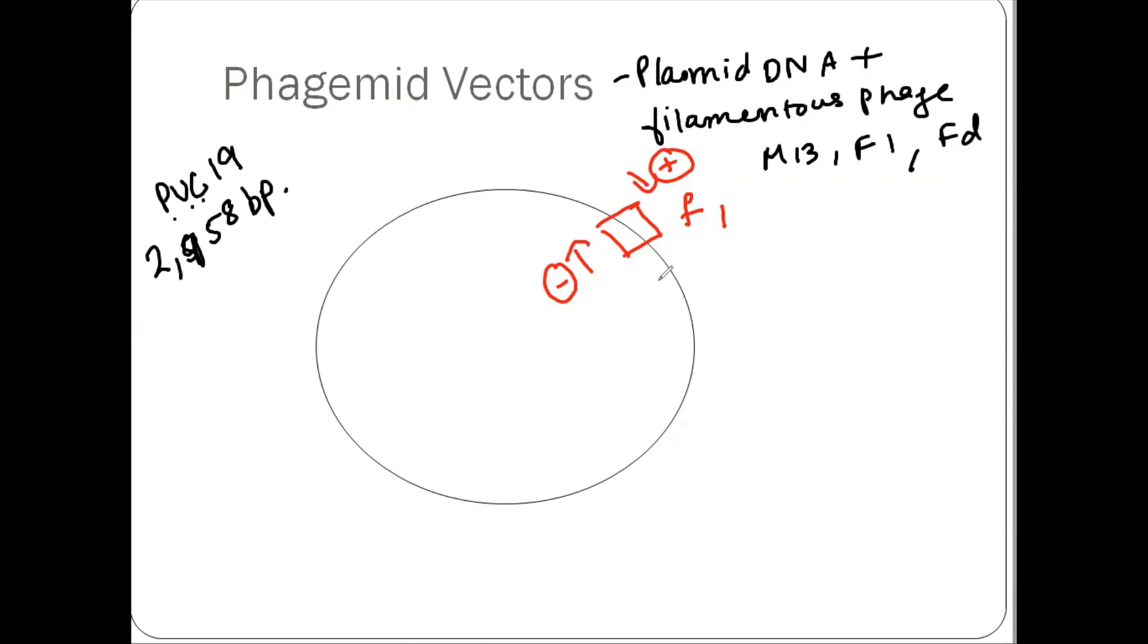Now with this, it also has its lac Z gene with its promoters, lac promoter. And then it has ColE1 origin. And then it also has a selectable marker, which is ampicillin resistance marker. So because of all these features, as you can see here, it is used not only as a cloning vector, but it is also used in expression vector, riboprobe vector and sequencing vector. So this was all about phagemid vector.